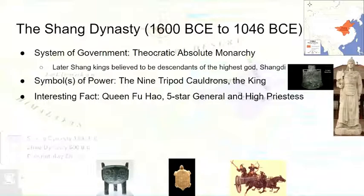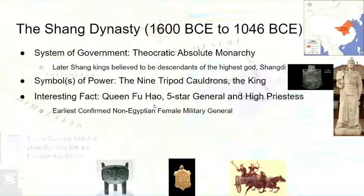Here's an interesting fact. China has a really early five-star general and high priestess by the name of Queen Fu Hao. She is the earliest confirmed non-Egyptian female military general. This is pretty significant. We know this because she has a ton of battle axes in her tomb, and there are oracle bones literally stating that the gods want her to lead the armies to face a barbarian invasion or any rebelling neighbors. So Fu Hao was a very important military figure in early China — and she was female, which is always significant.